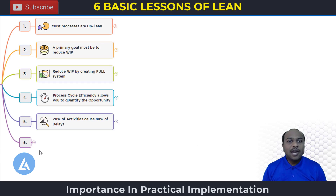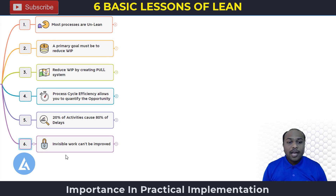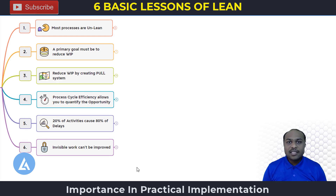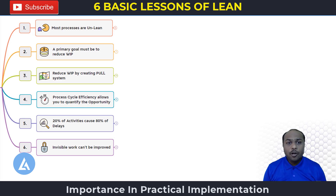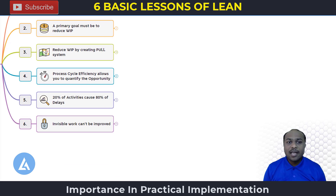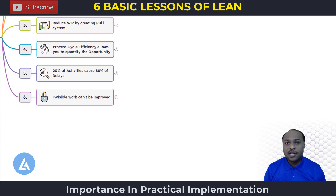After understanding these five important lessons, let's move to lesson number six: invisible work can't be improved. Everything in your business operations must be visible — anything which is not visible cannot be improved. There are different approaches for manufacturing versus service industries: in manufacturing, it is easy to see processes physically, trace the flow of work, walk the flow, and find waste to take immediate action.